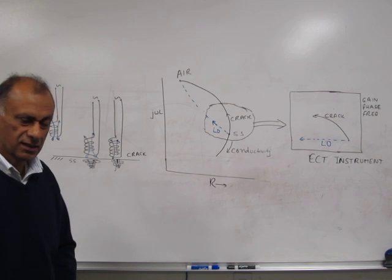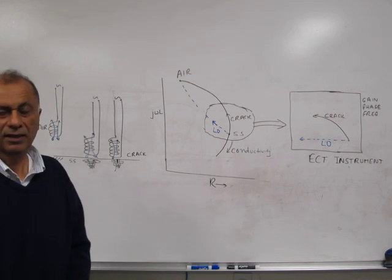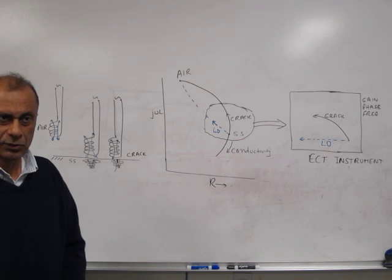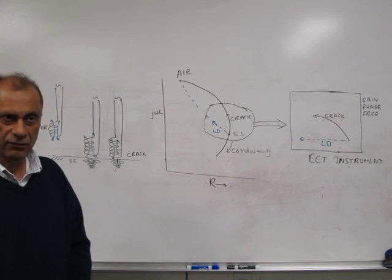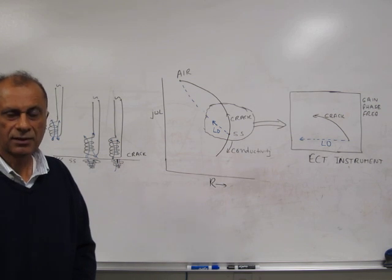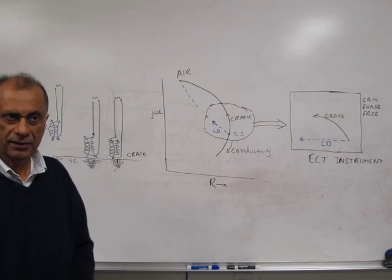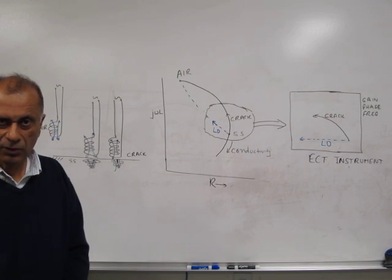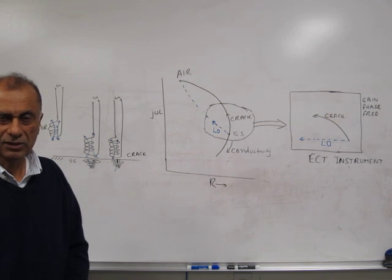Here I will be discussing the principle of eddy current testing. Eddy current testing uses a coil which produces a magnetic field and which is lowered onto the surface of a conductive material. Because of the alternating magnetic field in the coil, eddy currents are produced inside that material, which oppose the magnetic field of the coil, thereby changing the impedance of the coil.